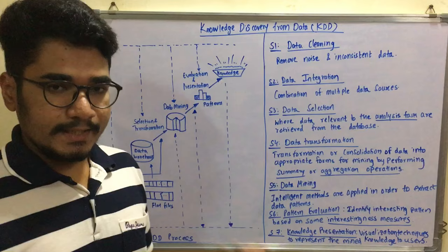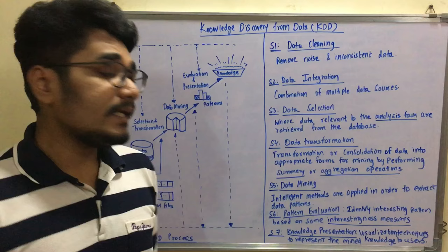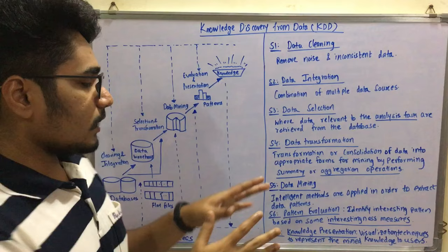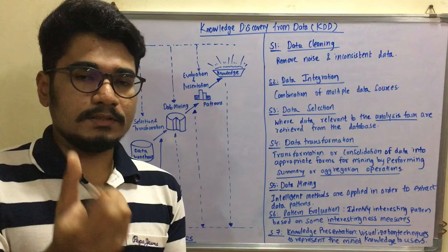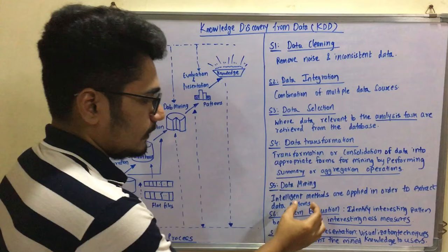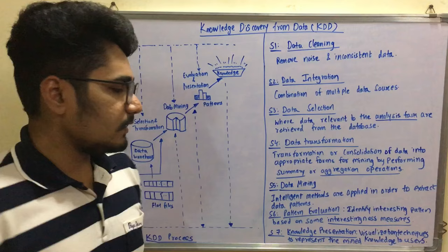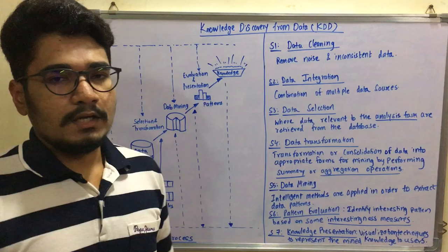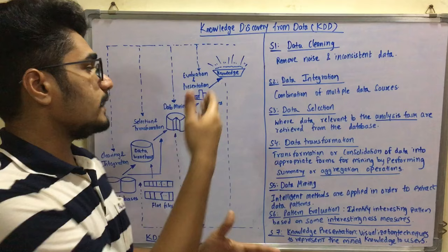Then comes data mining — the part we are most interested in within knowledge discovery from data. Different intelligent methods are applied to extract data patterns. Taking the blockchain example: in blockchain there is a concept of creating blocks to generate Bitcoin. That is a kind of interestingness measure. You identify such patterns using intelligent methods, then apply pattern evaluation to identify interesting patterns based on interestingness measures — for example, what different changes have occurred over the past 10 to 15 years — and represent those in a pie chart, bar graph, or other visualization formats.